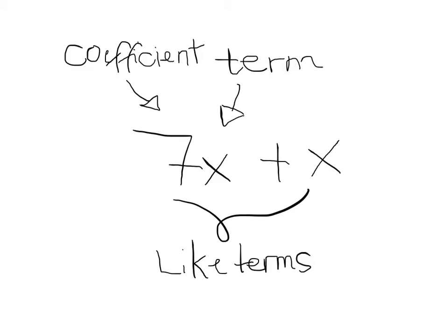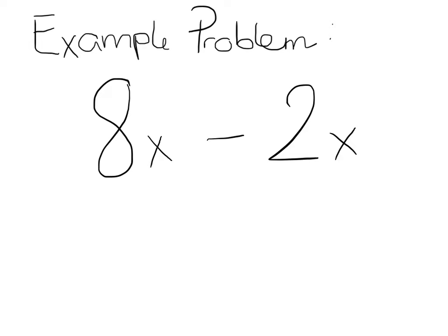Constants, or numbers, are also like terms. To simplify an algebraic expression that has like terms, combine the terms. Combining like terms is like grouping similar objects.